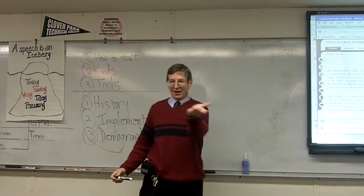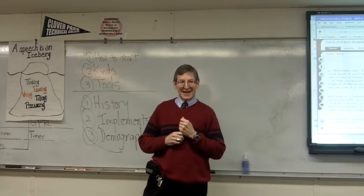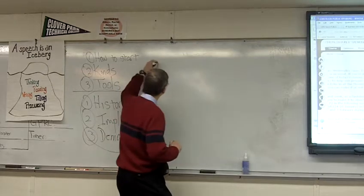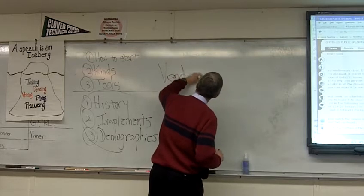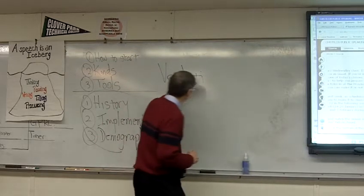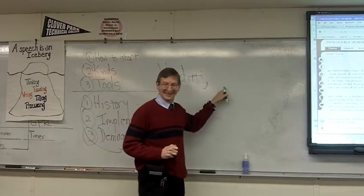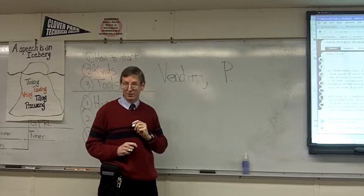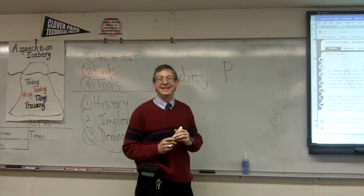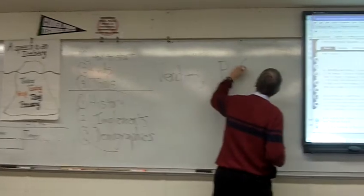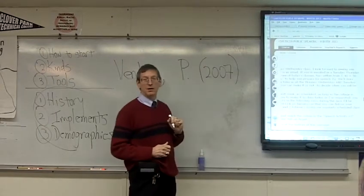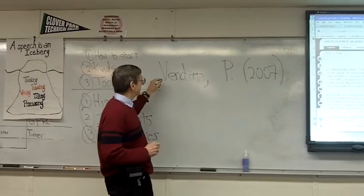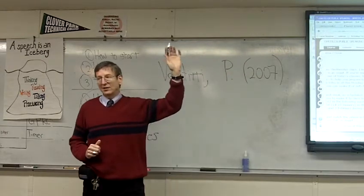Let's take the book that you have for me. According to APA, the way that you write a book citation is you put the last name of the author first, then a comma, then the first name initial, then a period and a space, then the year in parentheses, then a period and a space. Now you'll notice that this is going too far to the right when you are doing citations in APA.